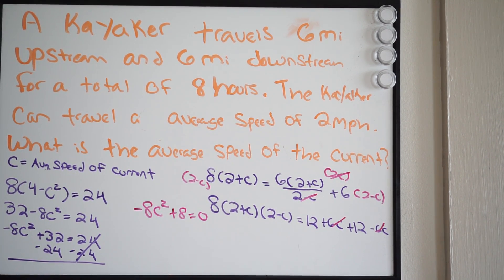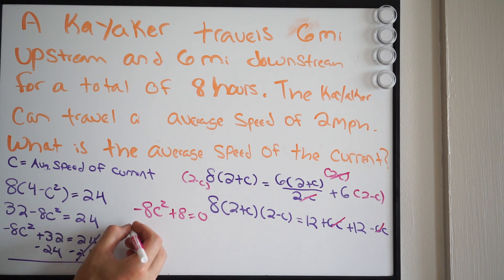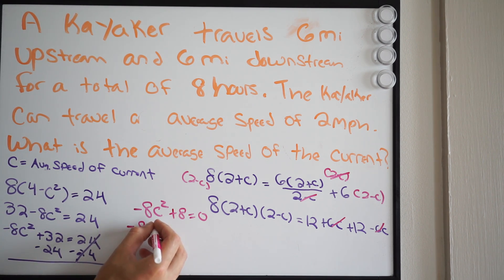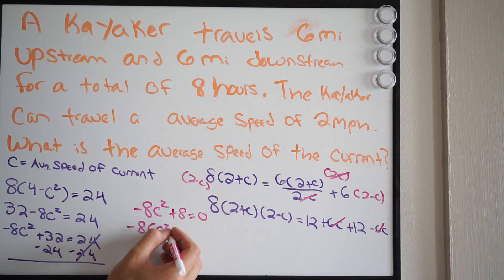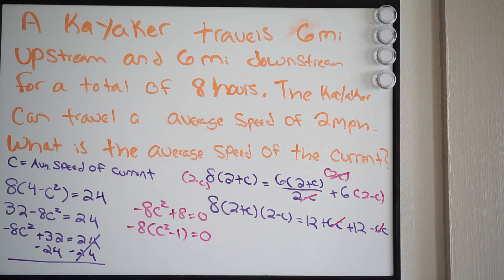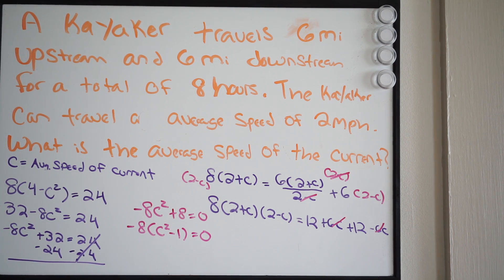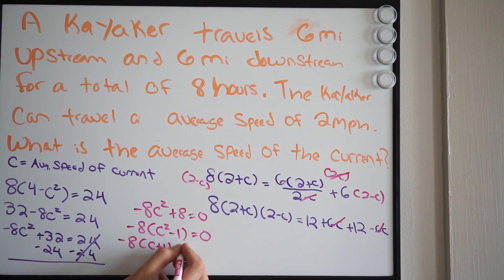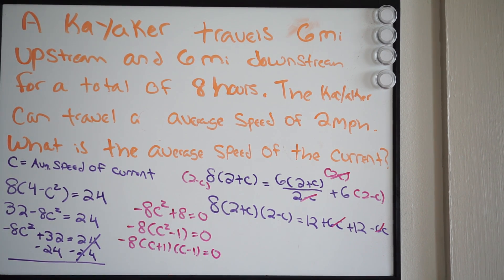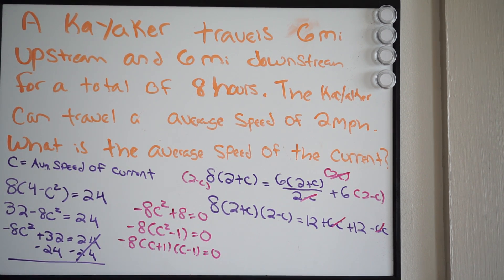Think about how to solve this — we need to factor. I can take out a greatest common factor of negative 8. Factoring out negative 8 gives C squared minus 1 equal to 0. Now this is a difference of two squares, so we can expand further: negative 8 times (C plus 1)(C minus 1) equals 0. Now we're fully factored and can set each factor equal to 0 and solve.